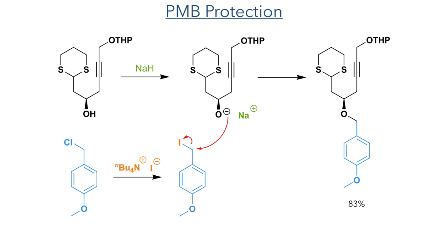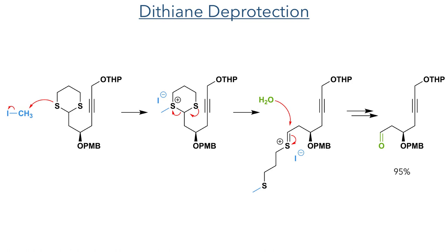With this now installed, the researchers then deprotected the dithiane. They did this using methyl iodide, which alkylates one of the sulfur atoms, forming a sulfonium that can then be eliminated to form a thiocarbenium intermediate. This is then hydrolyzed with water to produce an aldehyde in a 95% yield.